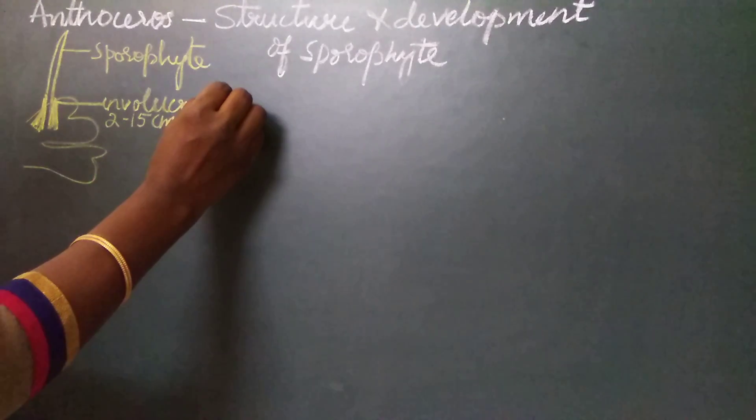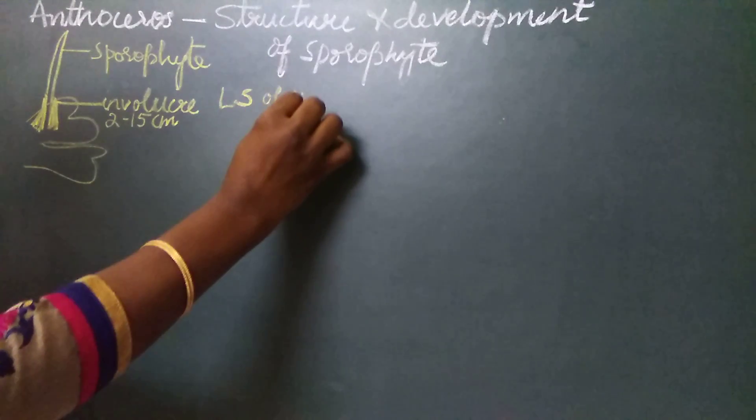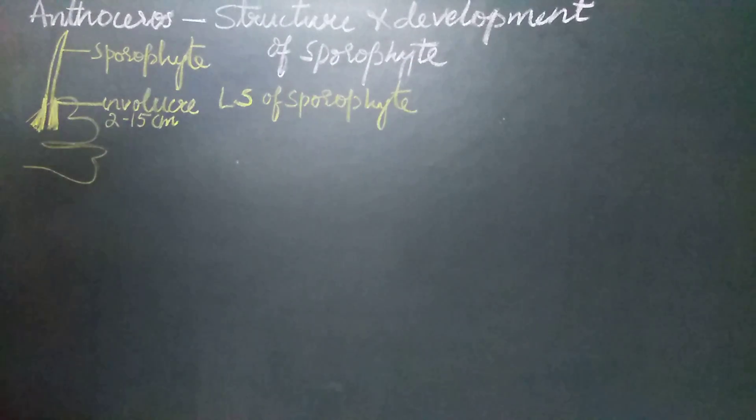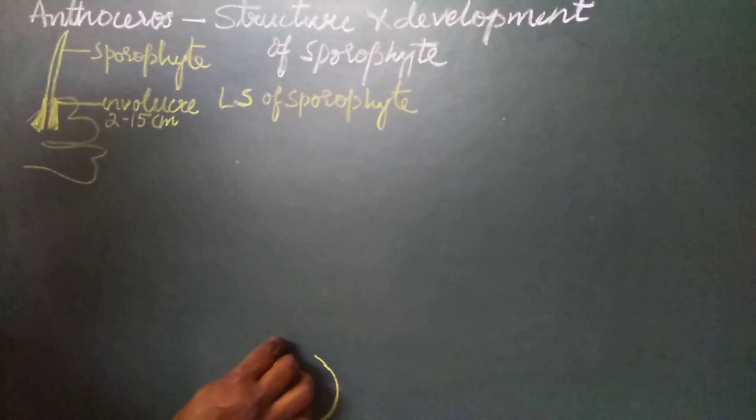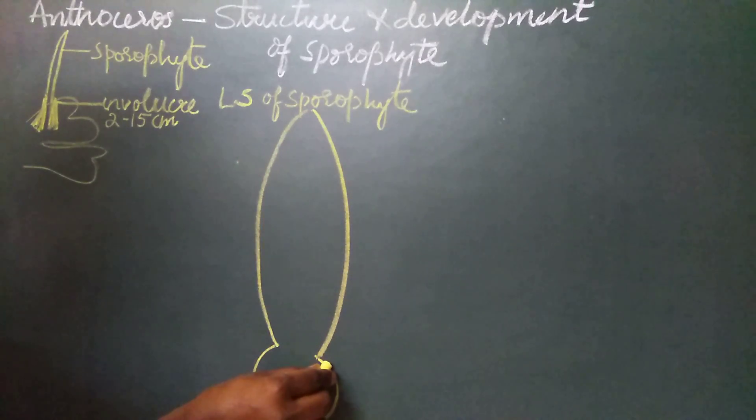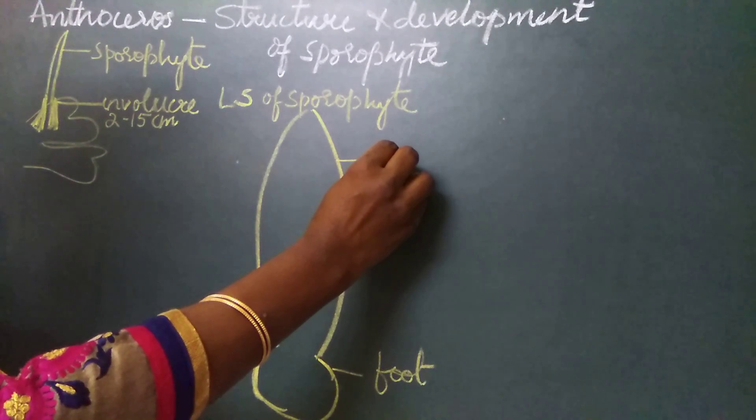The internal structure of the sporophyte can be well studied in longitudinal section. The LS of sporophyte reveals two distinct parts: one is the basal structure which is bulbous and massive, and the upper part which is elongated and slender. The basal bulbous region is called the foot, and the upper elongated structure is called the capsule.